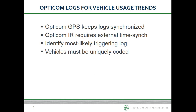Next, let's review vehicle usage trends. One popular use of OptiCom logs is to calculate travel time between two intersections along a given corridor. This application is usually only available to OptiCom GPS system users due to the fact that OptiCom log time stamps are constantly GPS synchronized. If using an OptiCom IR system, be sure to use some system for keeping your clocks updated, such as CMS or an external time sync. Using logs to calculate travel time can be tricky due to the fact that a log entry is created every time there is a status change within a vehicle kit.